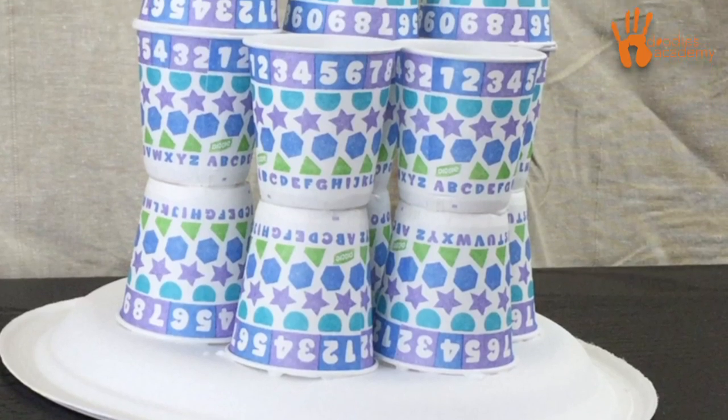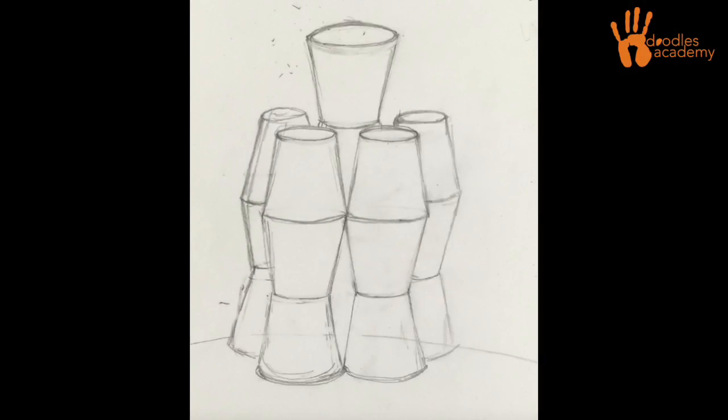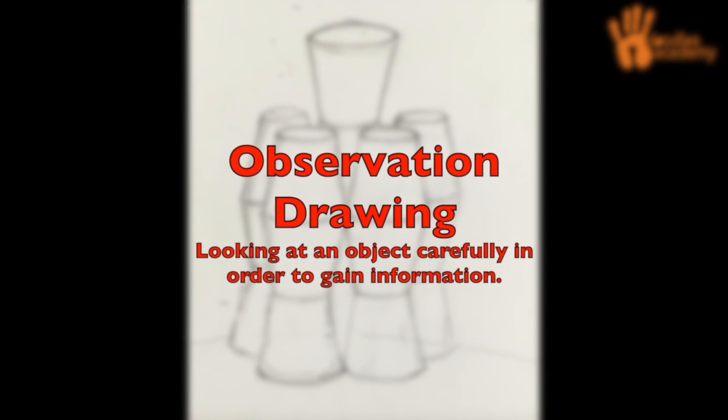Today we're going to carefully look at that house that we built last lesson and make an observation drawing based off of it. Observation drawing is the act of looking at an object carefully in order to gain information about that object.